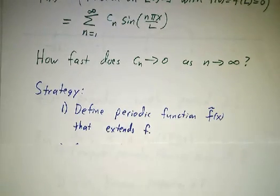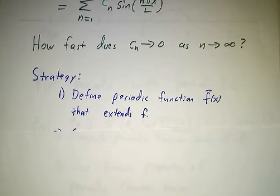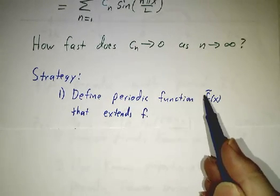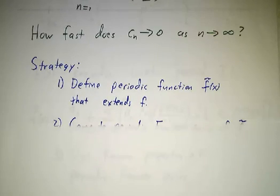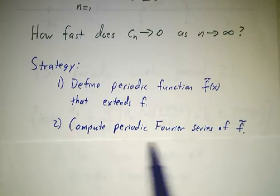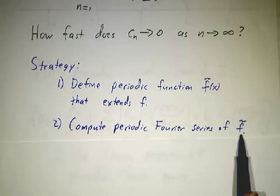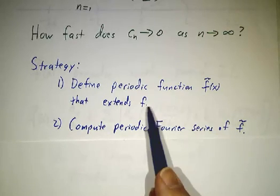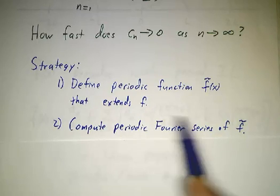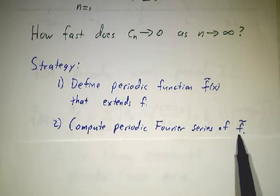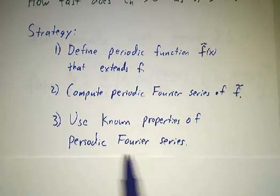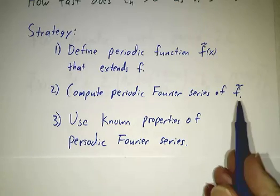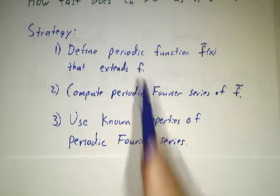Our strategy for studying this is turning it into a problem for periodic functions. We're going to define a new periodic function, f-twiddle of x, that extends f, and then we're going to compute the periodic Fourier series of f-twiddle. We're going to realize that the sine Fourier series of f is very closely related to the periodic Fourier series of f-twiddle. Then we're going to use what we learned about periodic Fourier series in the last video, apply it to f-twiddle, and interpret the results for f.